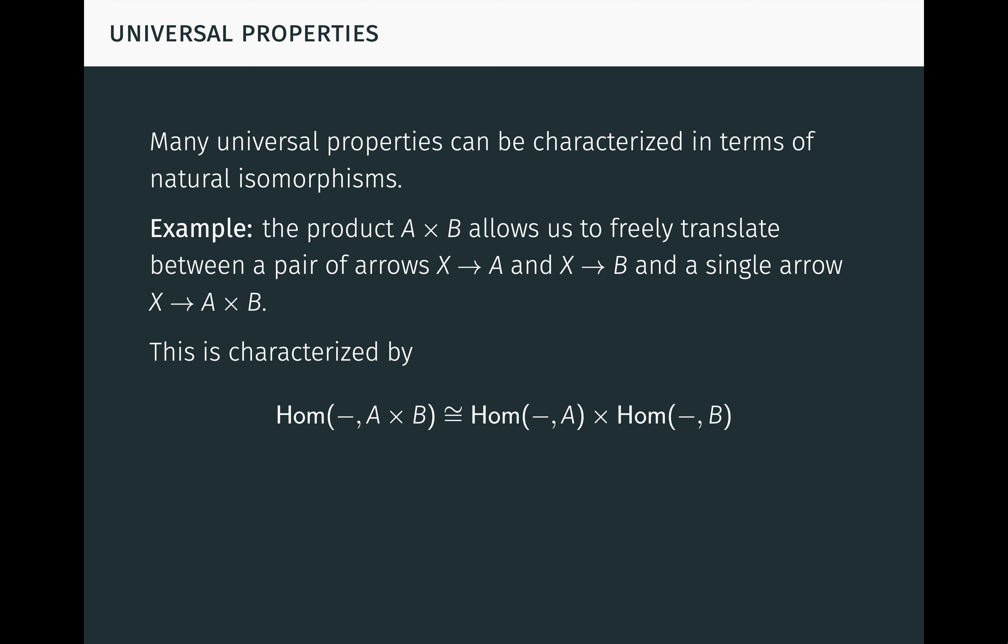This can be characterized by a natural isomorphism of HOM functors, as seen here. For an object X, HOM XC is defined to be the set of arrows from X to C. For an arrow f, HOM FC is defined to be the function which precomposes f. It's easy to verify that HOM blank C so defined is a contravariant functor into the category of sets, provided the source category isn't too large. Specifically, the collection of arrows between any two objects needs to form a set.